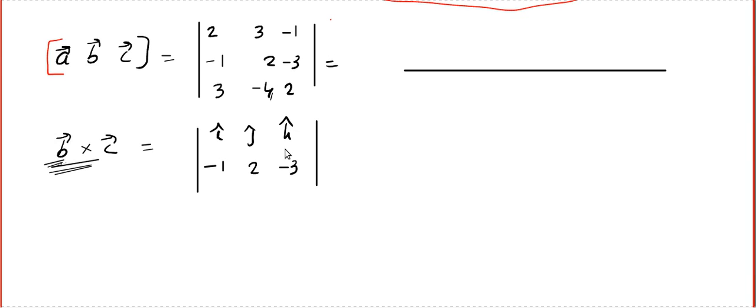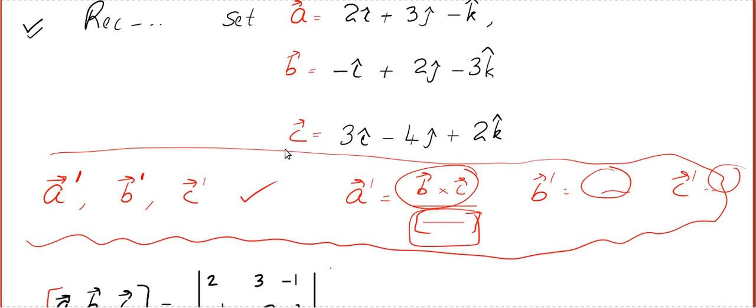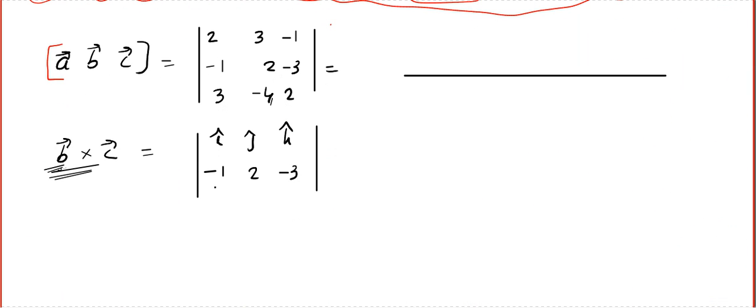Then we go for B cross C. If you want to find the cross product, the first row in the determinant will be i, j, k. The second row will be components of B, which is minus 1, 2, minus 3, and the last row will be for C, which is 3, minus 4, 2.